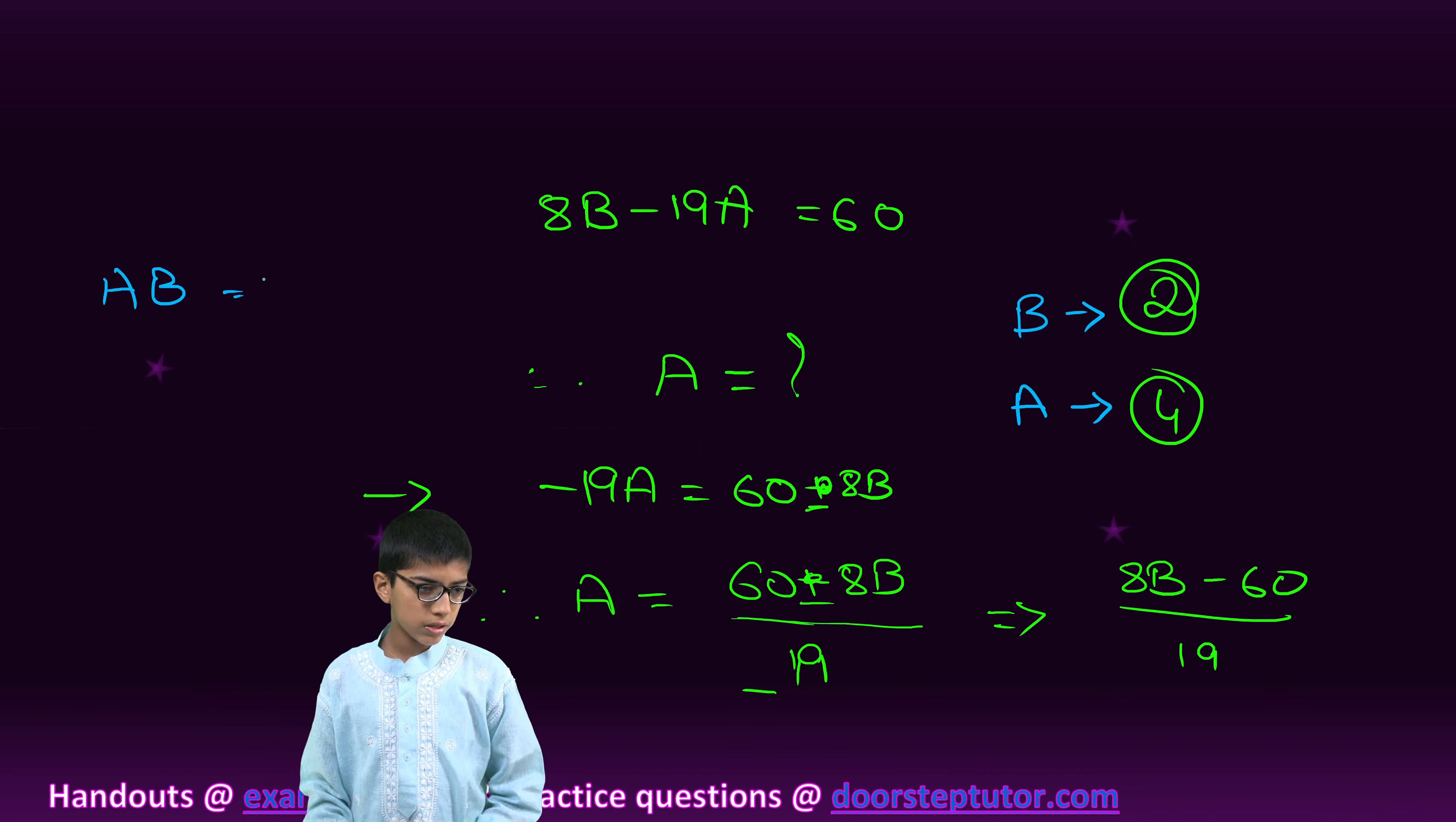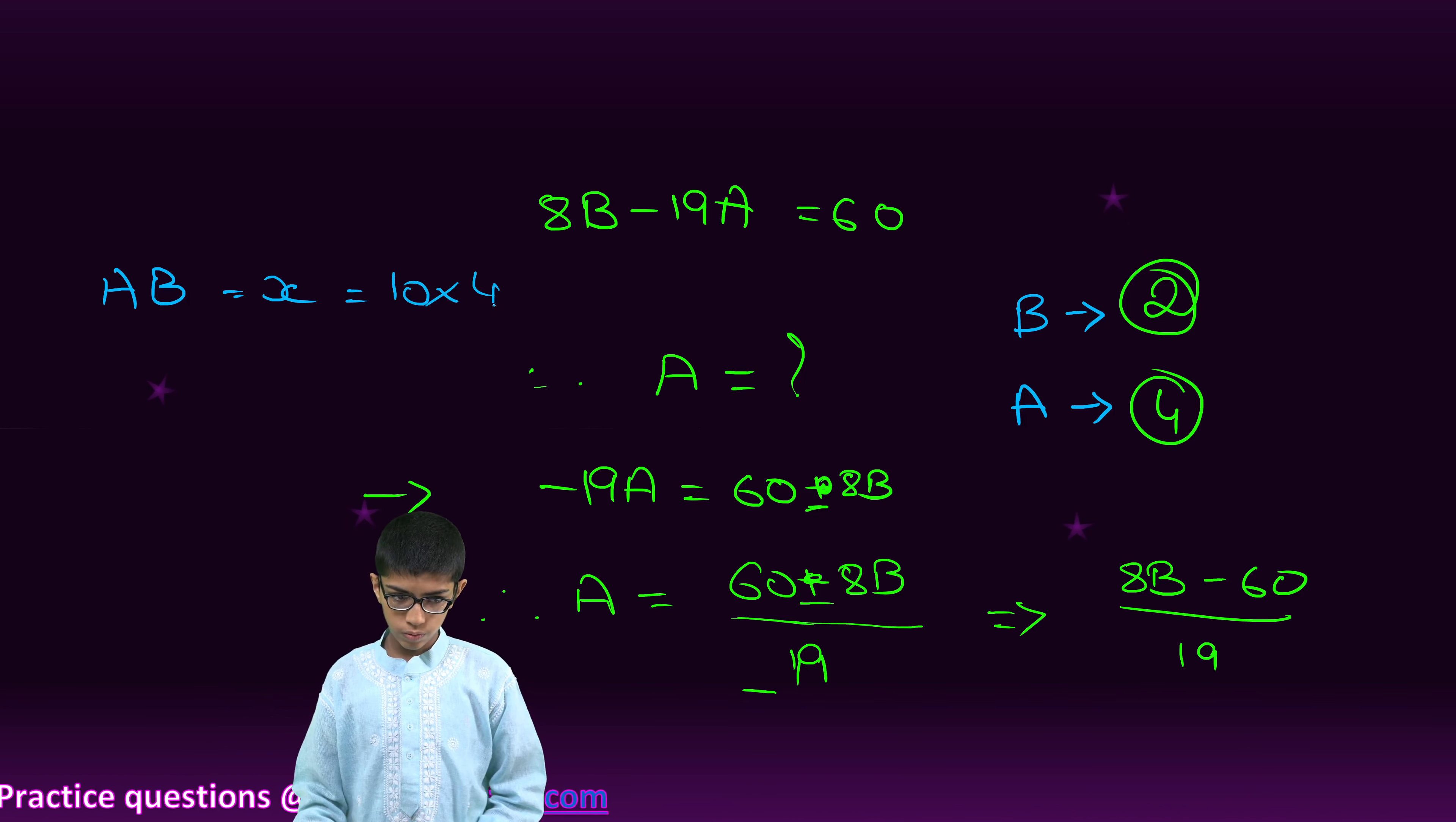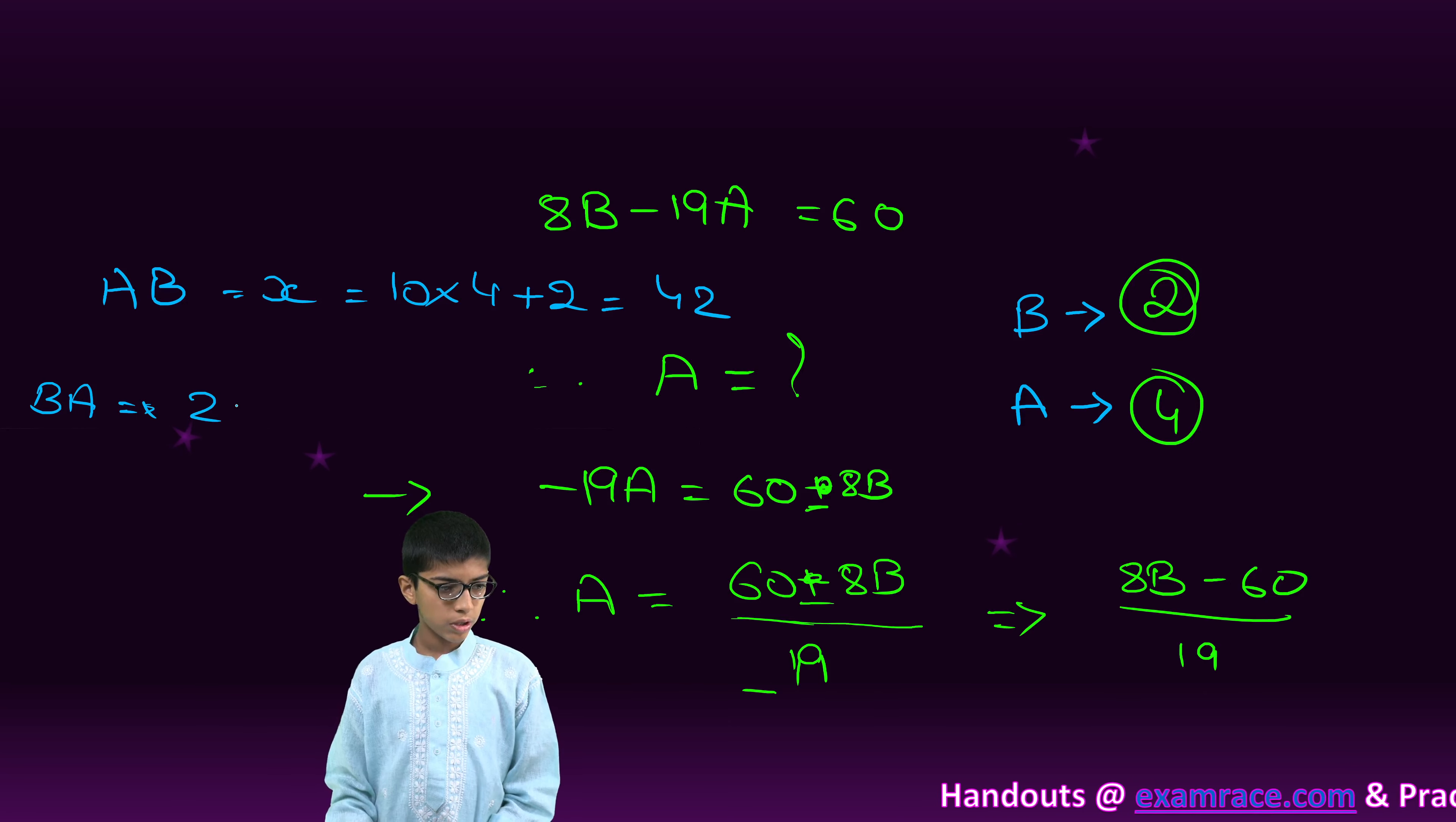Therefore, A, B equals to X equals to 10 into 4 plus 2 equals 42 and BA equals to 24.